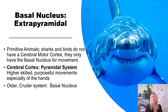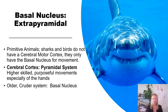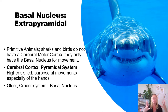Primitive animals like sharks and birds do not have a cerebral motor cortex — they only have the basal nucleus for movement, so their movements are crude. A shark can't perform fine motor movements like a ballerina, but it gets around just fine in the water with just its basal nucleus. The cerebral cortex pyramidal system gives us higher-scale purposeful movements, especially of our hands. The basal nucleus is the older, cruder system; the cerebral cortex is the newer system.